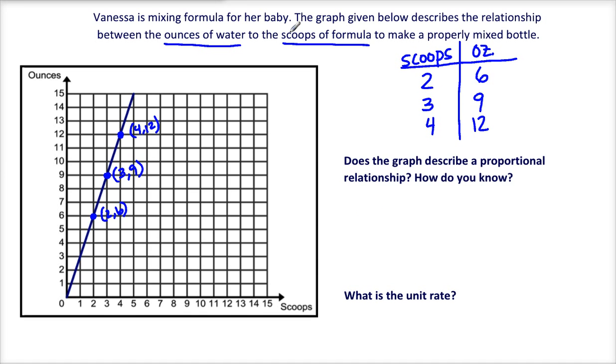Since it's saying ounces to scoops, we're going to do a fraction with ounces on top and scoops on bottom. I want to make sure I set up all my fractions so the ounces are on top and scoops are on bottom. Using my table: 6 over 2 equals 3. The next line says 3 scoops goes with 9 ounces, so 9 over 3, which equals 3 as well.